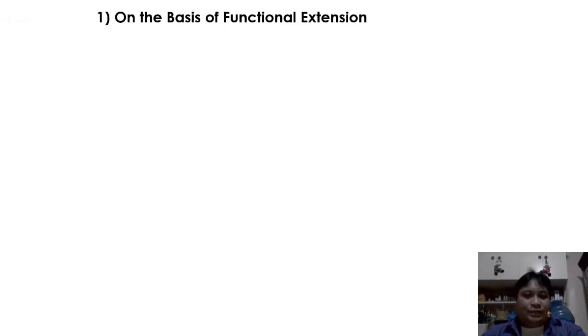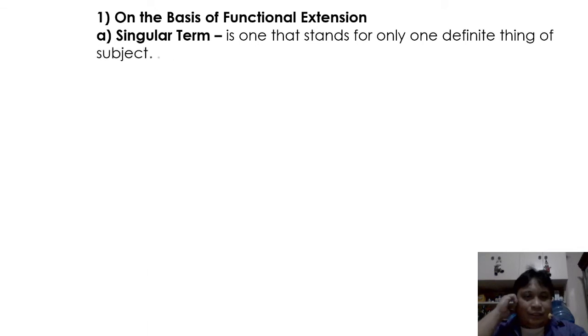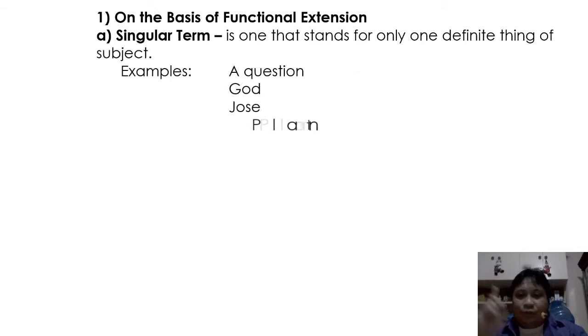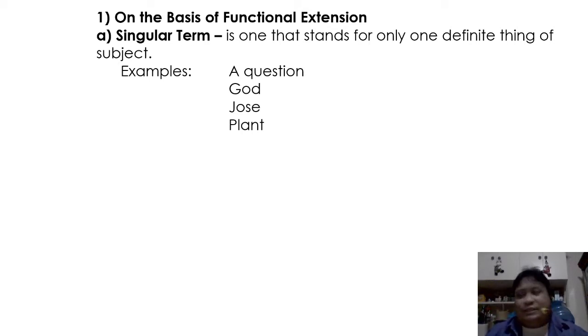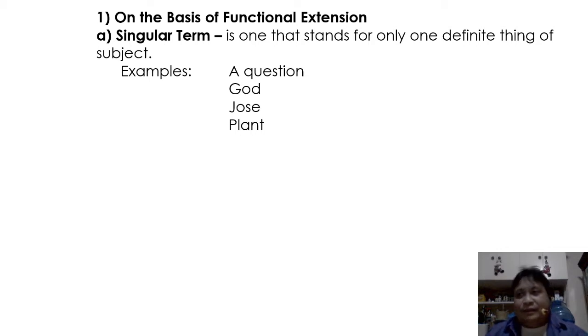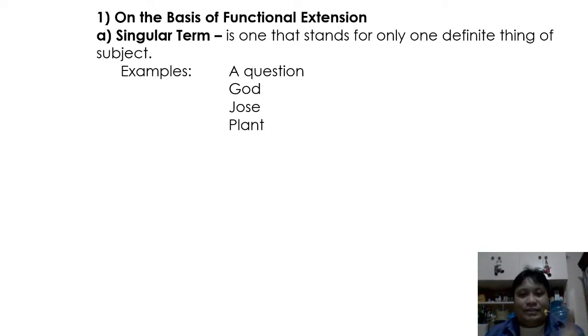Let us begin with the classification of terms. First, we'll deal with the basis of functional extension. The first type is the singular term — it's the one that stands for only one definite thing or subject. For example: God, Jose, plant, animal, person, thing, animal, place. These are singular terms that stand for only one definite thing.